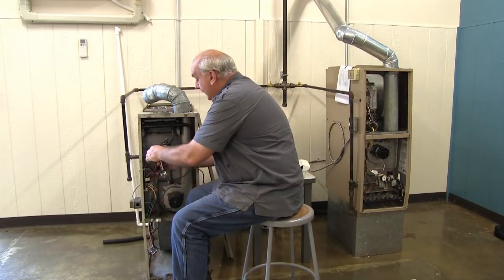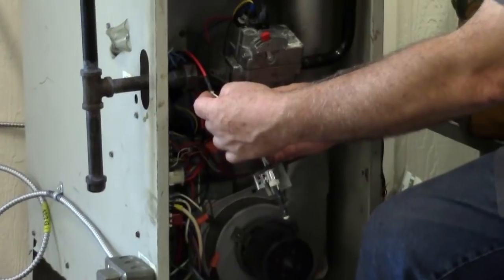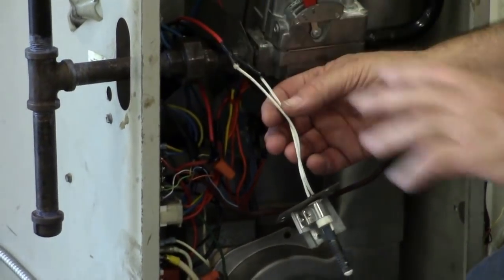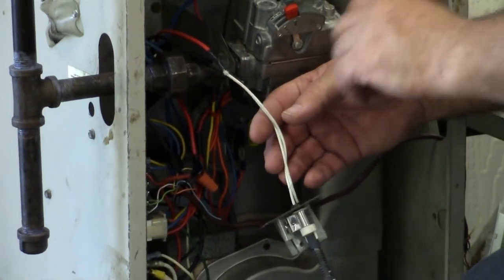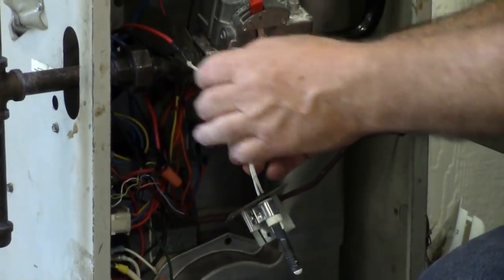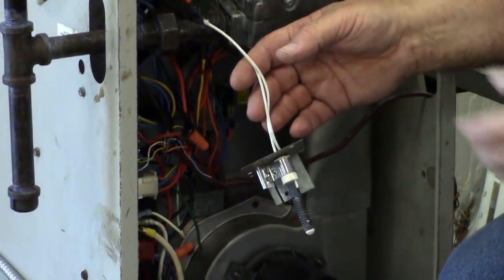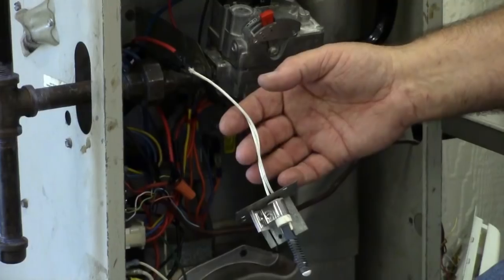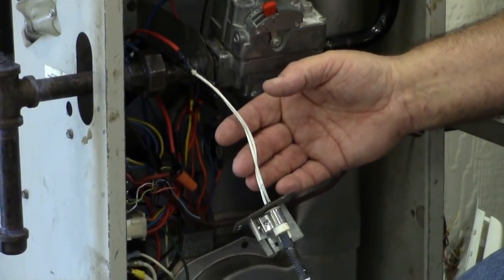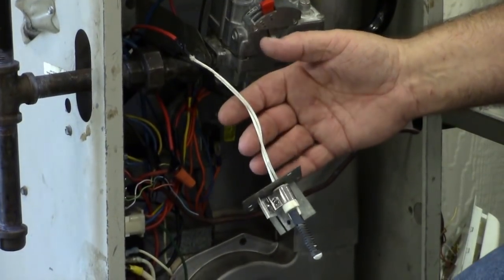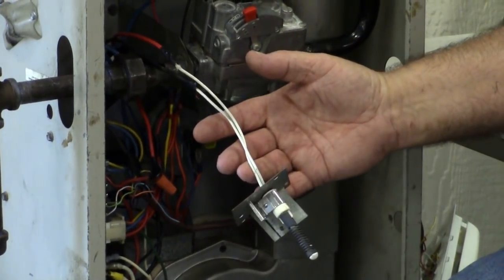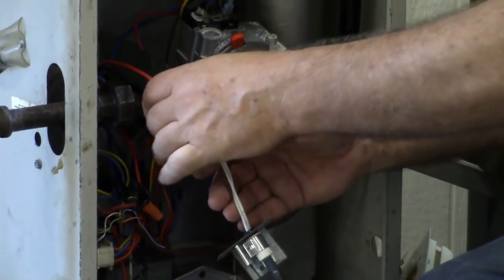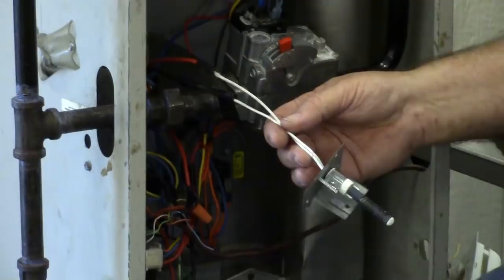So right here where you see this black electrical tape is where we have the wires together. We would untwist those, take the new one, put the wires together, twist it. Now normally I would use wire nuts on here, not black electrical tape, but again this is kind of an indication of a person who has put this in that didn't quite do it correctly. But anyhow, so we would use wire nuts here.